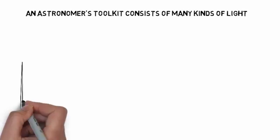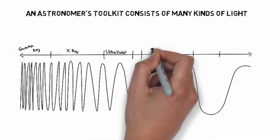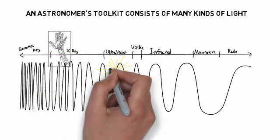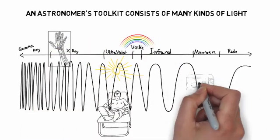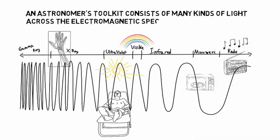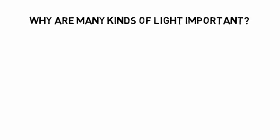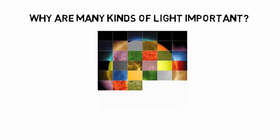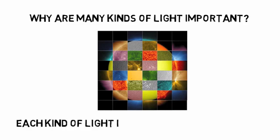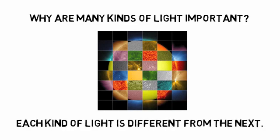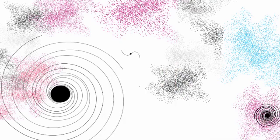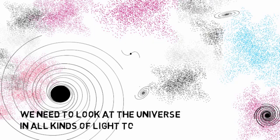An astronomer's toolkit consists of many kinds of light across the electromagnetic spectrum. Why are many kinds of light important? Each kind of light is different from the next.